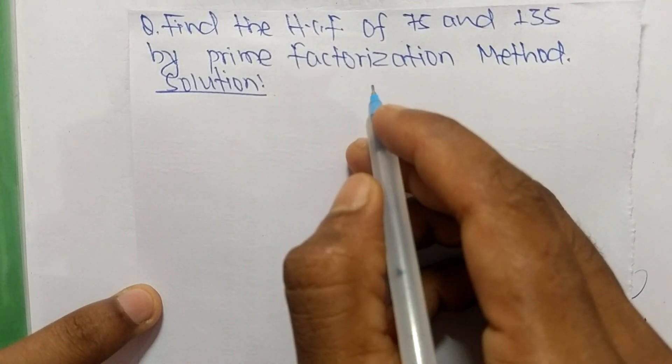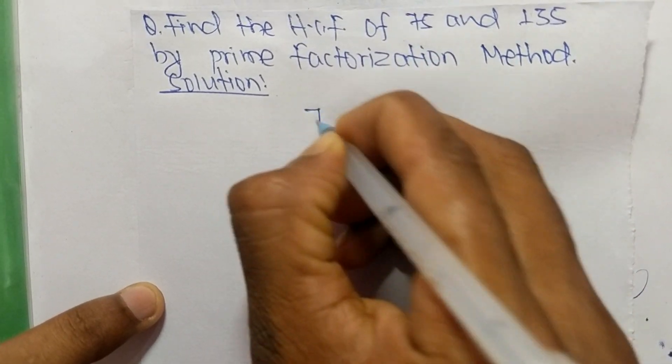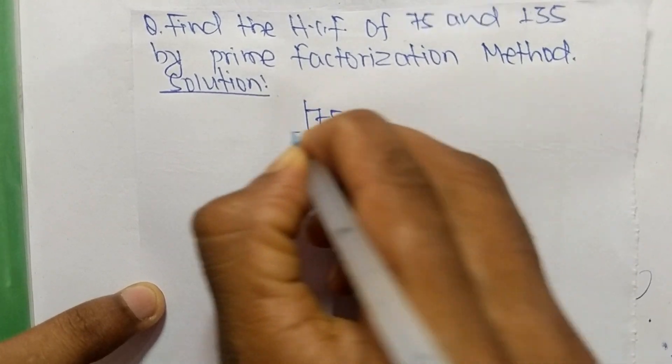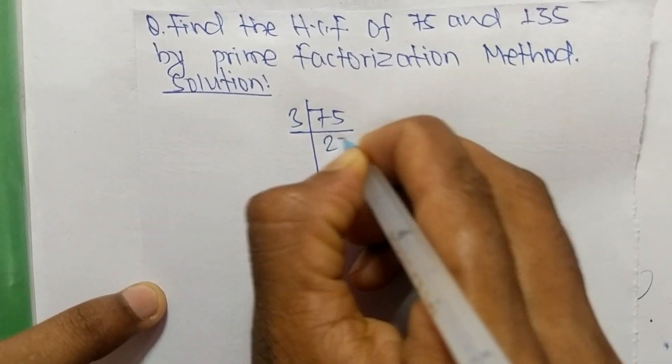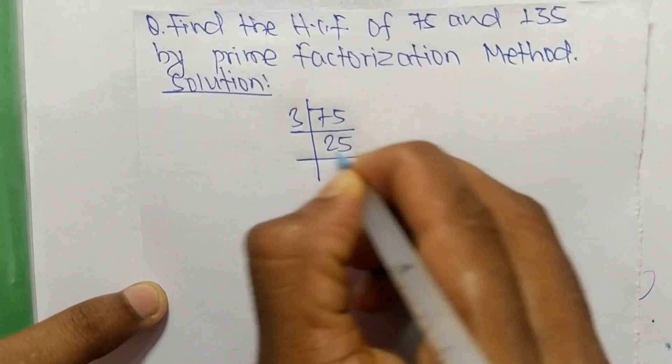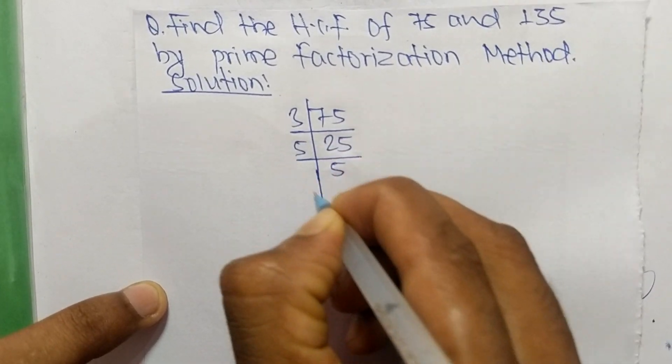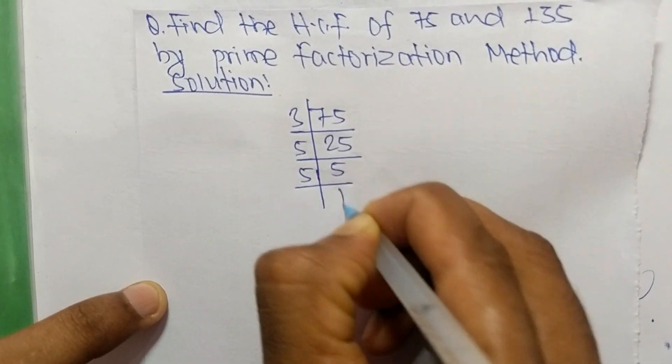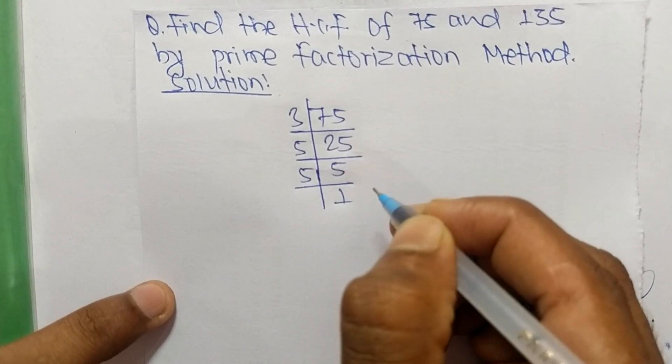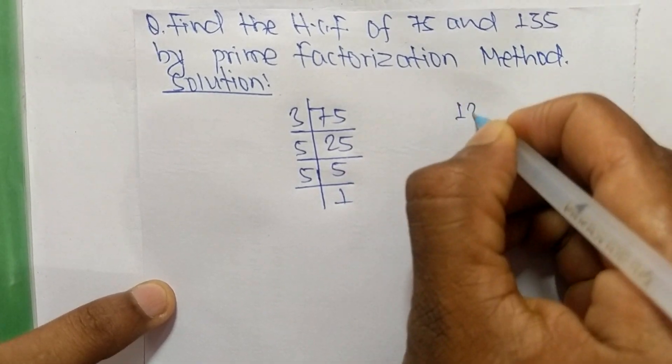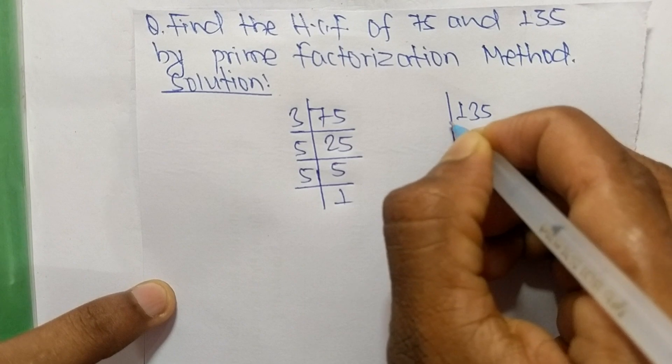First, we find the prime factors of 75. It is 3 times 25 equals 75, 5 times 5 equals 25, and 5 times 1 equals 5. Now for the prime factors of 135.